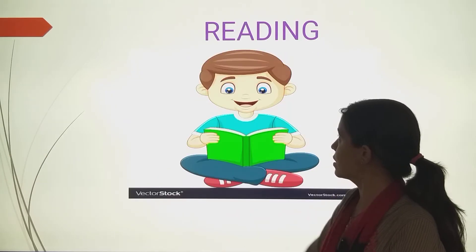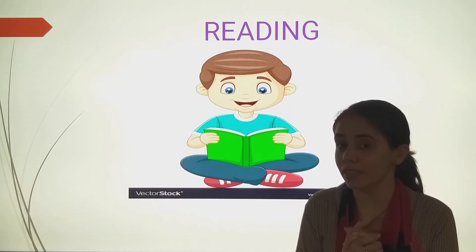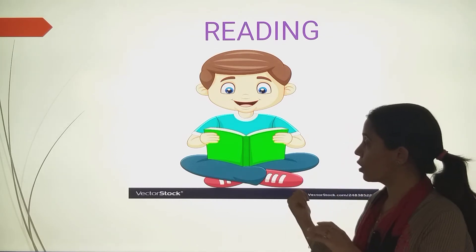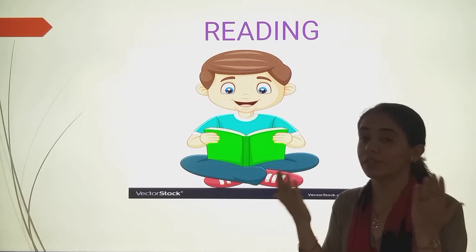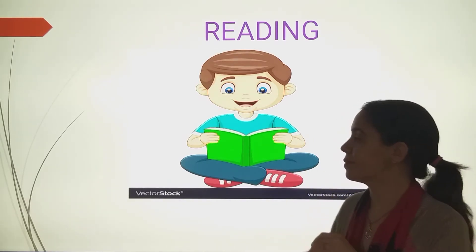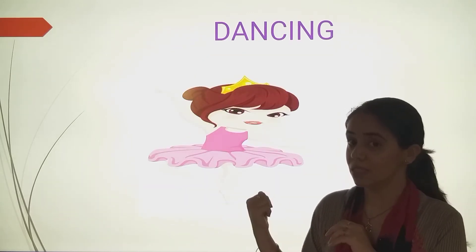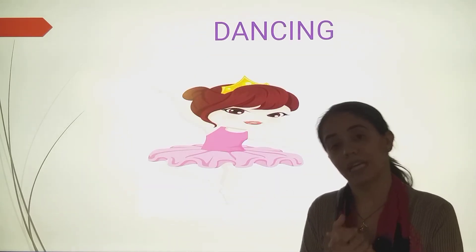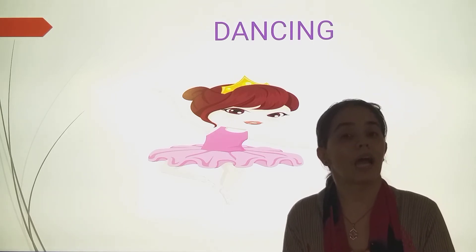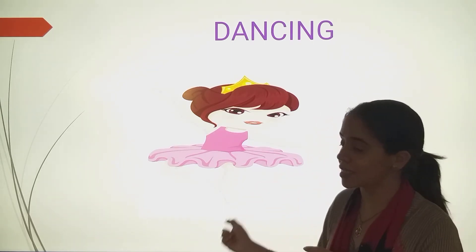Then the next is reading. Ma'am was reading. This boy is also reading — so what is this? Action word. Then dancing. This girl is dancing. So what is this? This is also an action word. This girl is dancing.